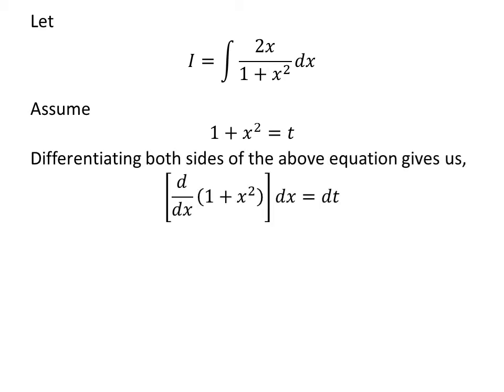Let us find the value of dt. Taking the differential of both sides of the above equation gives us d/dx(1+x²)dx = dt. The derivative of 1 is 0 and the derivative of x² is 2x. So, 2x dx = dt.